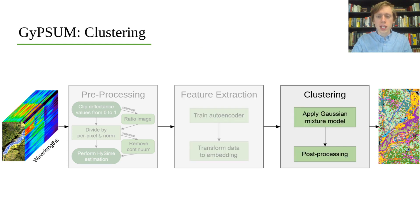We use the learned embedding to cluster using a Gaussian mixture model, and optionally combine clusters with the smallest spectral angle between their mean pixels. The complete details of our methods are in our paper.